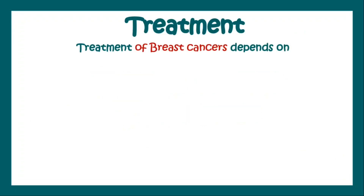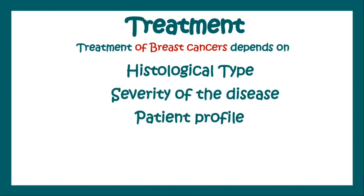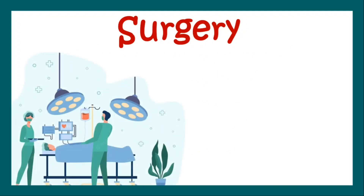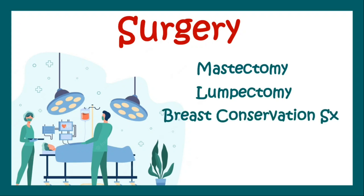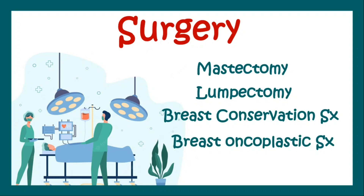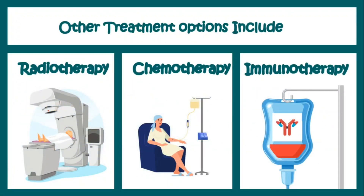Breast cancer treatment includes different modalities and depends on the histological type or immunohistochemical type of the breast cancer, the severity of the disease, and the patient's profile — meaning the age, race, socioeconomic status, and affordability of the treatment. The mainstay of treatment is mostly surgery, which can include a mastectomy (removal of the entire breast), a lumpectomy (removal of the lump), a breast conservation surgery, or a breast oncoplastic surgery. Apart from that, you can go for radiotherapy, chemotherapy, immunotherapy, or even targeted therapies and hormonal therapies. Which one is suited for you will be decided by the doctor after performing all these investigations.